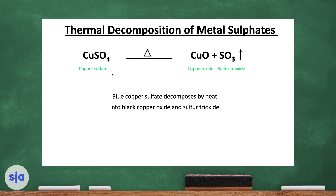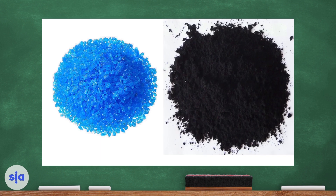This is copper sulfate, and by heat it will break down into copper oxide and sulfur trioxide, which is a gas. The blue copper sulfate turns into black copper oxide, as you can see here.